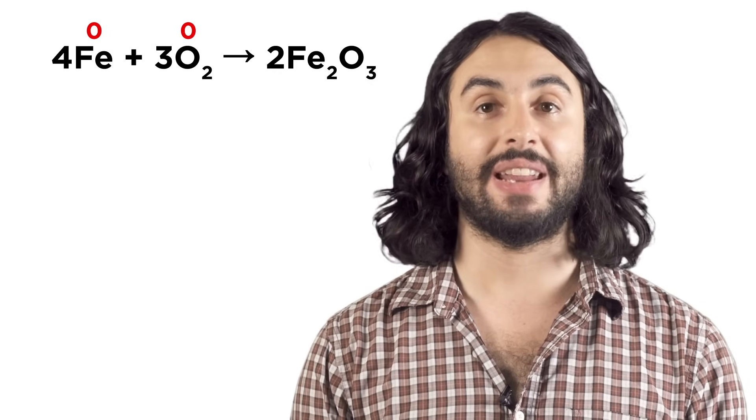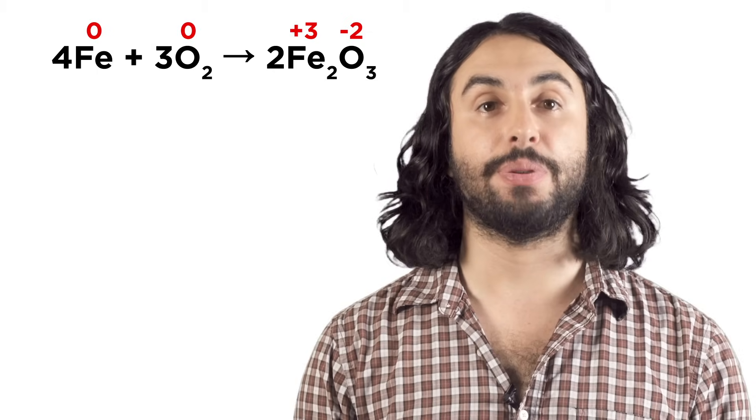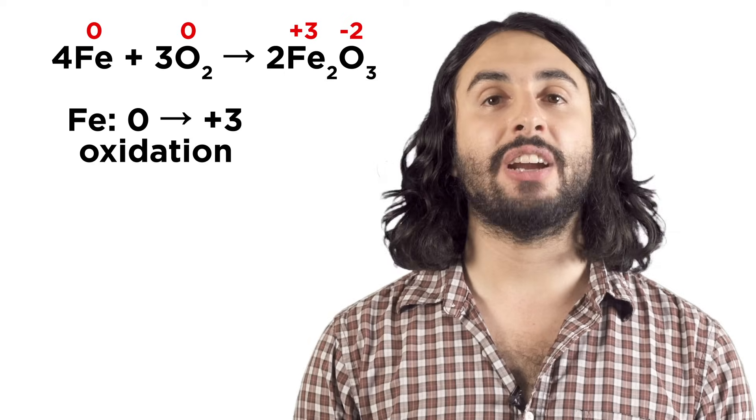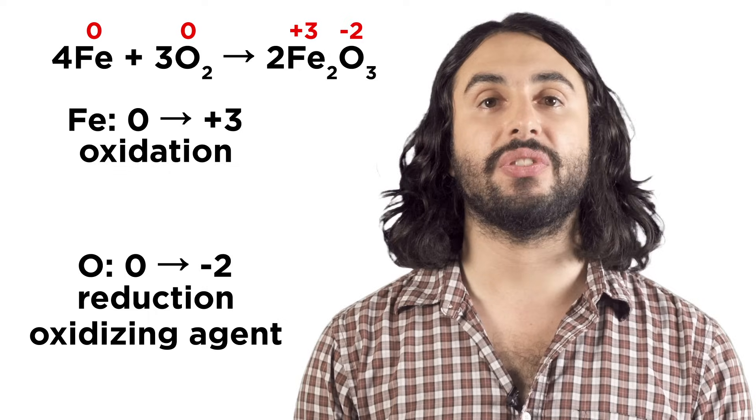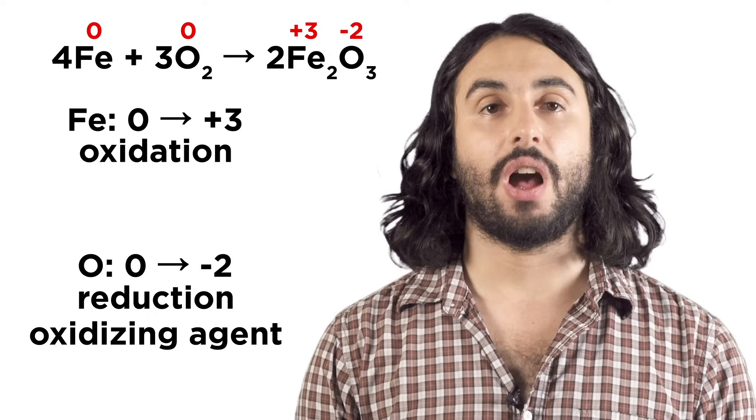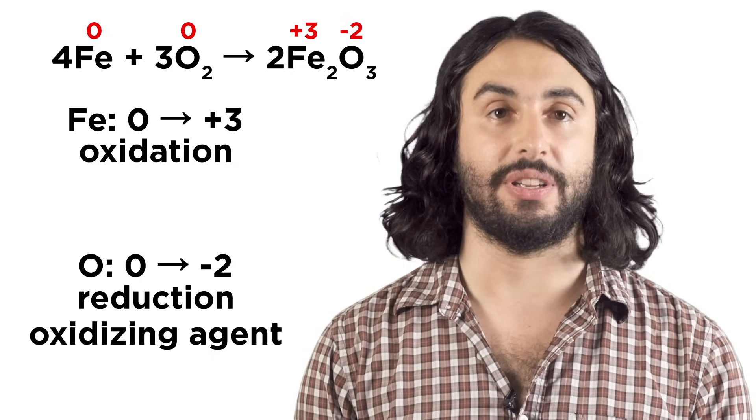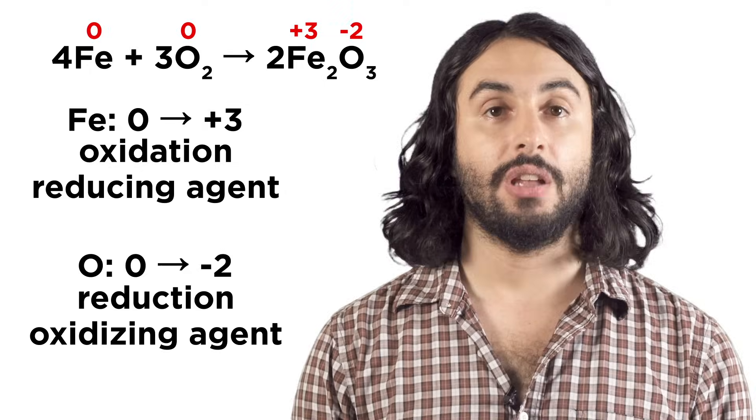On the right we know oxygen will be -2, and there's three of them, so we need iron to be +3 for everything to add to zero. This means the iron was oxidized since its oxidation number increased. Oxygen was the oxidizing agent. Oxygen was also reduced since its oxidation number decreased. That makes iron the reducing agent. Let's check comprehension.